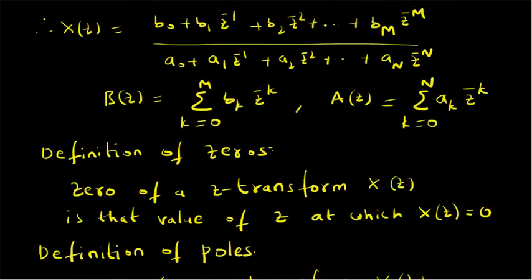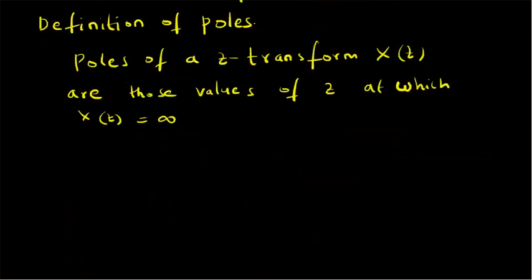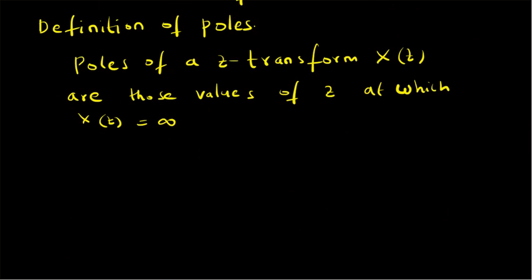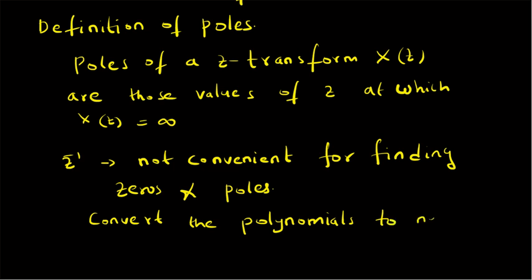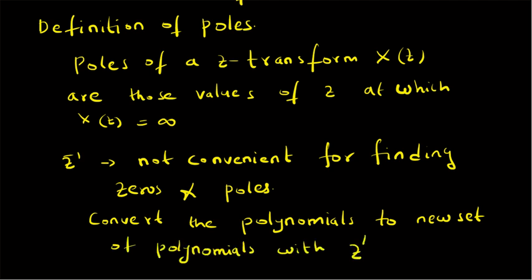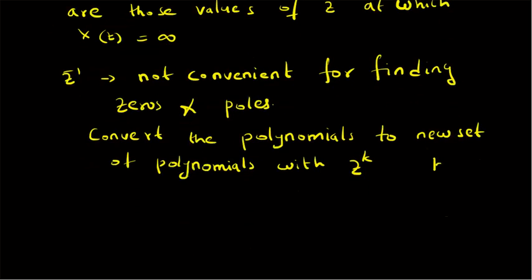Let us go back to the rational Z transform. Here we have the polynomials in terms of Z inverse, and it is not very convenient to find the roots of these polynomials. So first we have to convert these polynomials into a new form with positive powers of Z. Z inverse is not convenient for finding zeros and poles, so we have to convert the polynomials to a new set of polynomials with Z power K, where K is greater than or equal to zero.